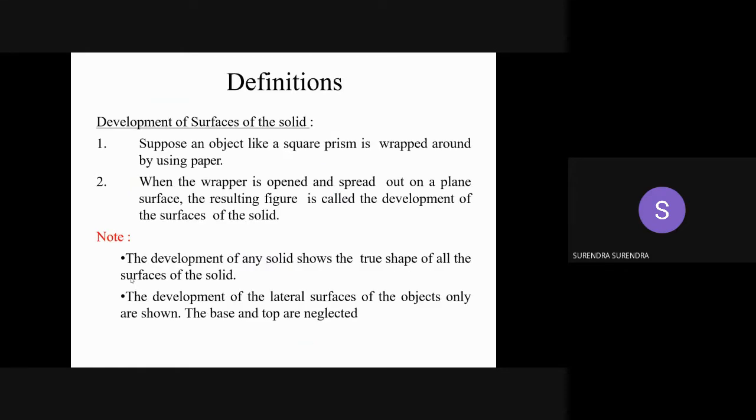So what is the development of a solid? Suppose this square prism pyramid what we discussed in projections of solid, all these are made with a thin surface instead of a complete solid. Like box of a toothpaste, toothpaste box or soapbox or any carton box used for the parcel, all those are made with thin surfaces. Those are not the solid object.